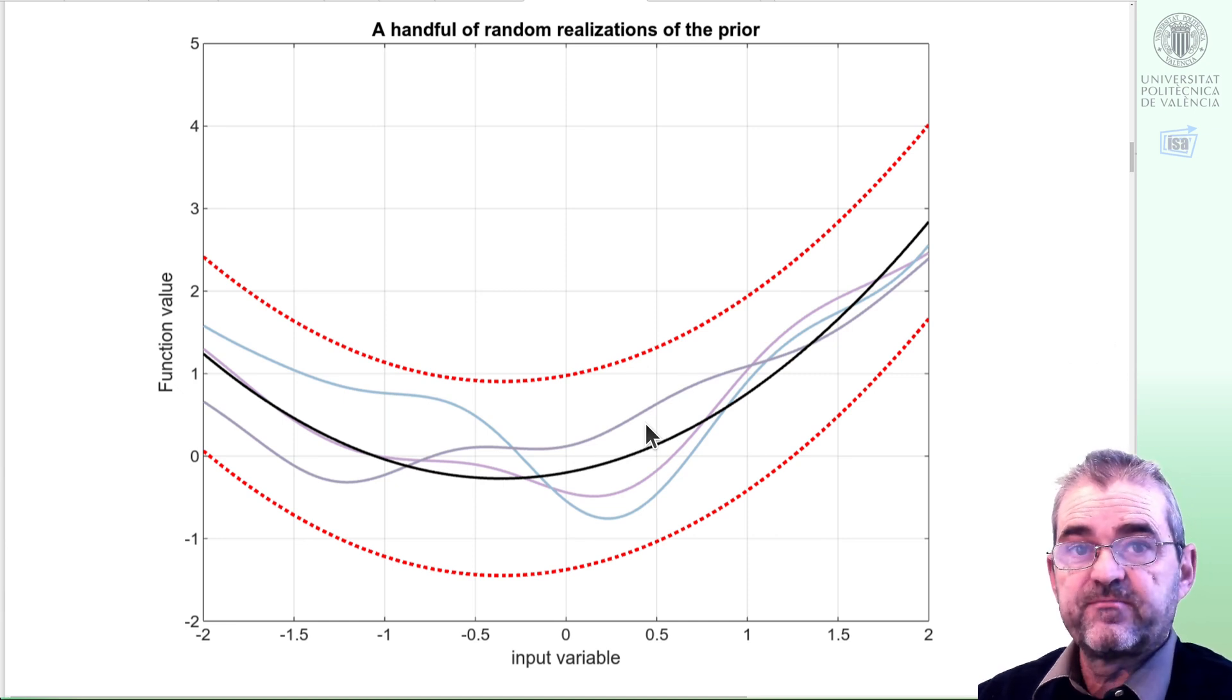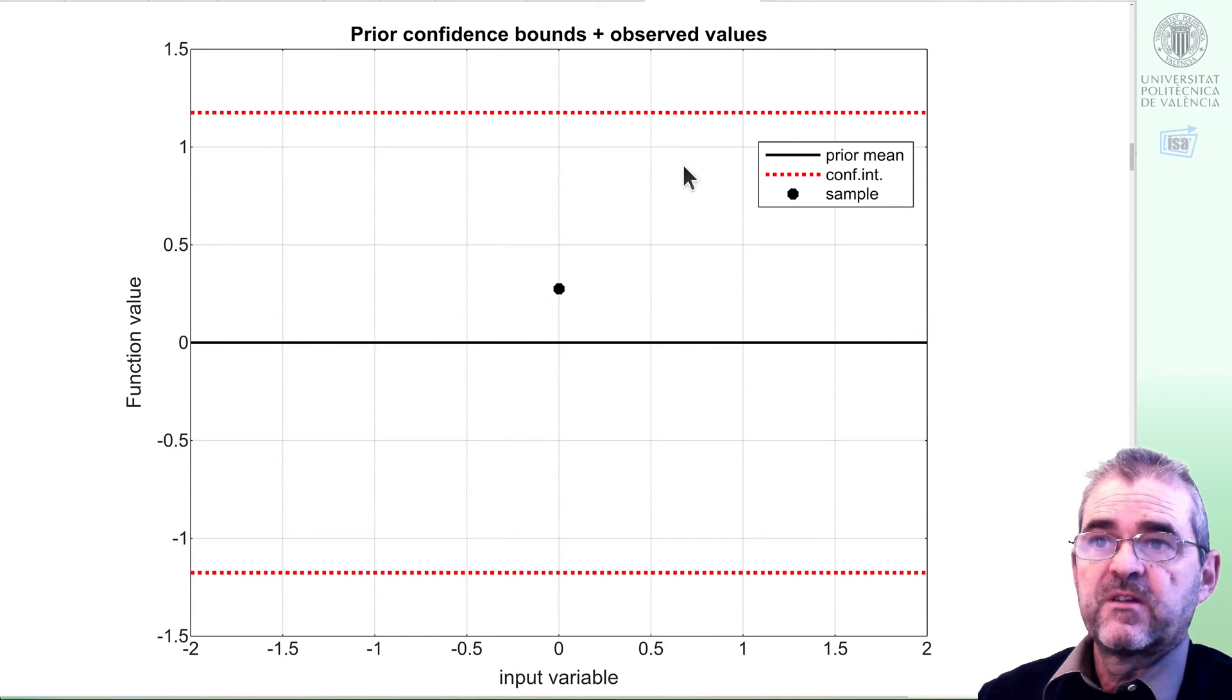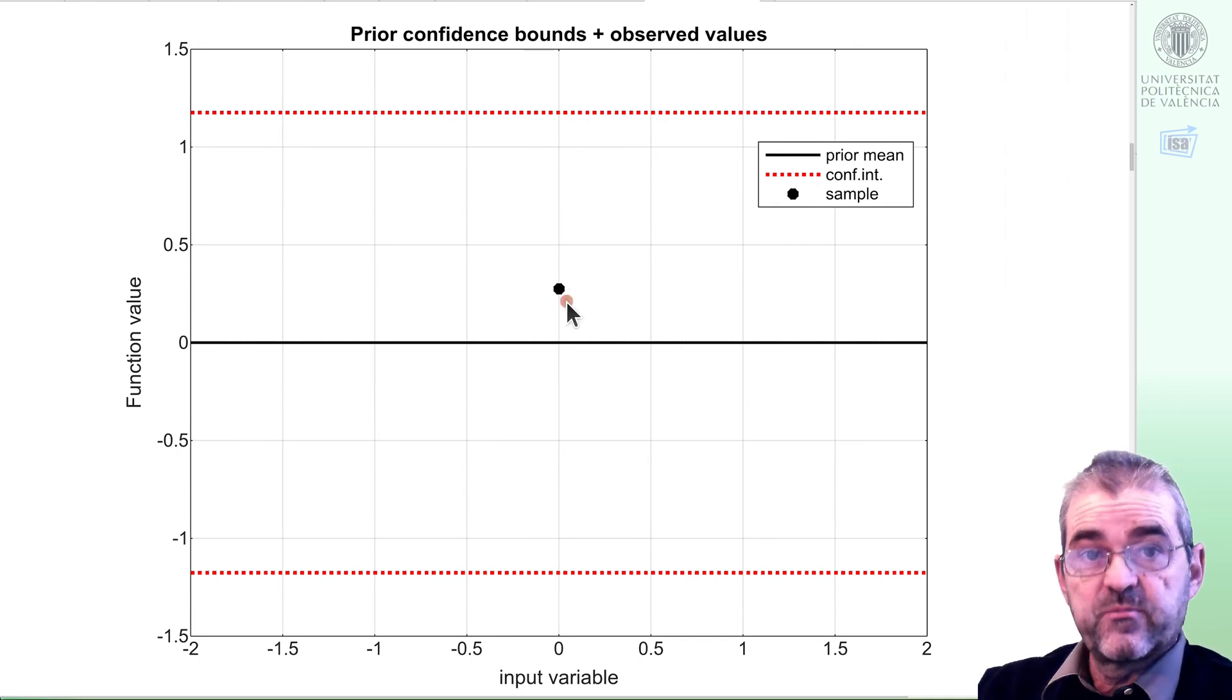In future videos, we will discuss other examples in which Bayesian optimization does not work, but okay, my true function is this kind of smooth. So everything starts with my prior and my first sample, and the methodology is just repeating the steps of updating the posterior, deciding example, acquiring it, and repeating until 12 samples in this case.